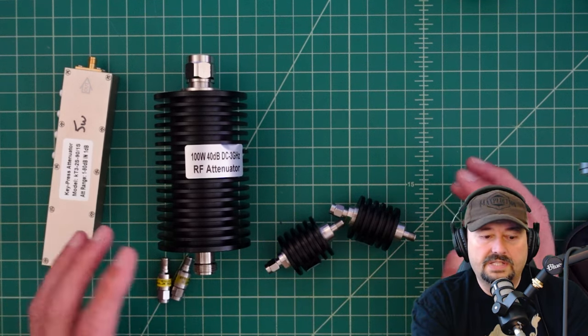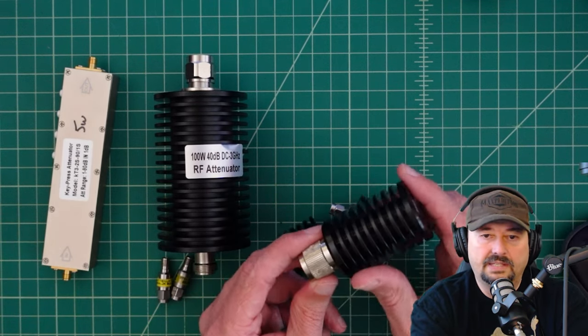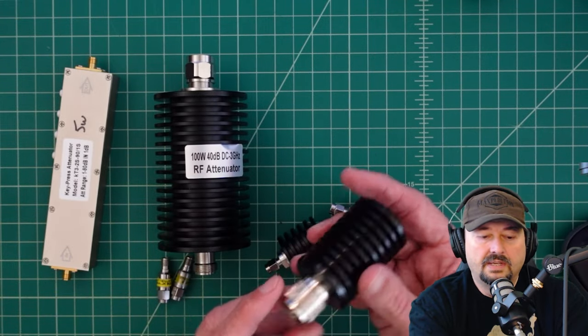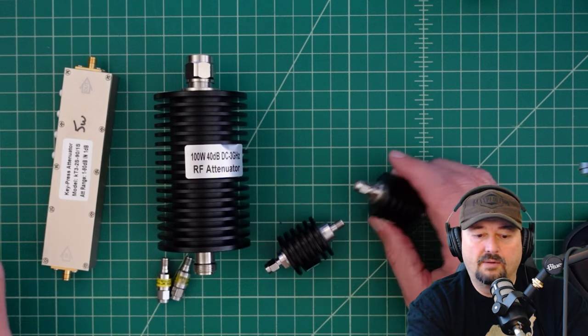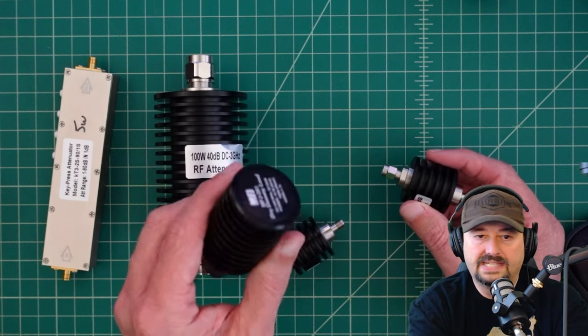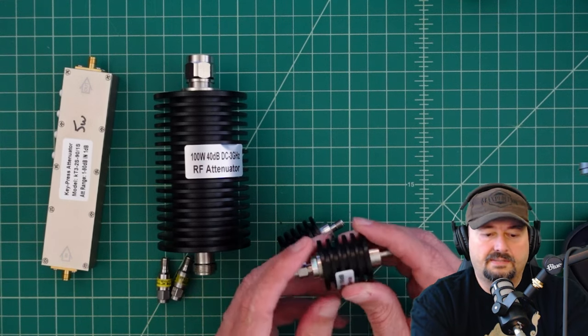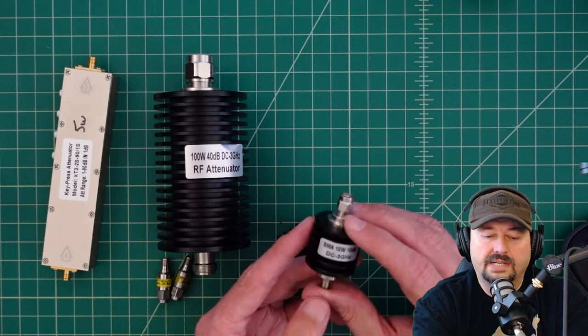But here we have a couple of different ones and a couple of different devices, and I just want to quickly mention, this is not a dummy load. This one is a dummy load. These are not dummy loads. Even though they look similar, the one thing you'll look for in attenuators, it'll have an input and an output. So the dummy load just has an input, but they operate very similarly. This is basically just a resistor network in here. Now, there's a couple of different ways to do that, but we're not going to get into all that.